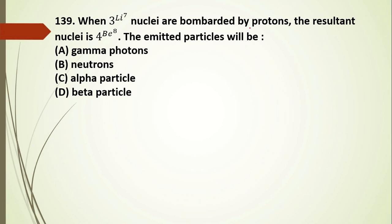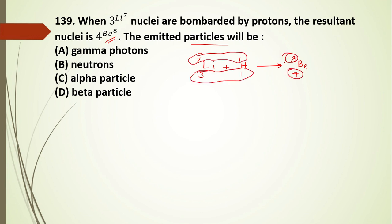Question 139: when lithium-7 nuclei are bombarded by protons, the resultant nucleus is beryllium-8. The reaction is Li-3-7 + H-1-1 → Be-4-8. Since charge and mass number are conserved, there should be no charge and no mass remaining, so the emitted particle is a gamma ray. The answer is gamma.